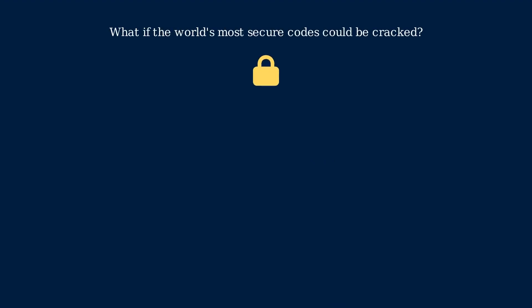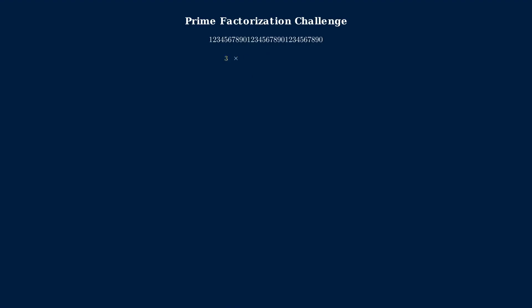What if the world's most secure codes could be cracked by solving a 160-year-old math mystery? Modern encryption like RSA relies on multiplying two large prime numbers to create a public key. The security comes from the difficulty of factoring this product back into its primes. Factoring a huge number like this into its prime factors takes immense computing power. For 300-digit numbers used in RSA, it could take thousands of years on current computers.